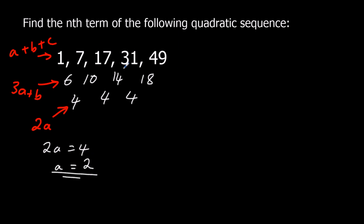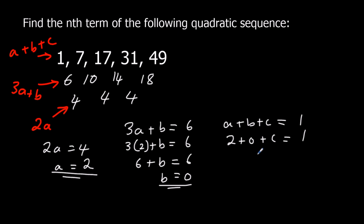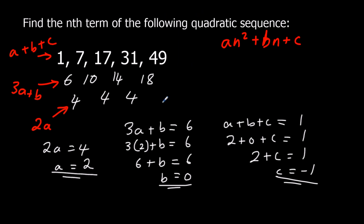With a equals 2 in the second equation: 3 times 2 plus b equals 6, so 6 plus b equals 6, giving b equals 0. Then a plus b plus c equals 1: 2 plus 0 plus c equals 1, so c equals negative 1. Since b is 0 there are no n terms, so the nth term is 2n squared minus 1.